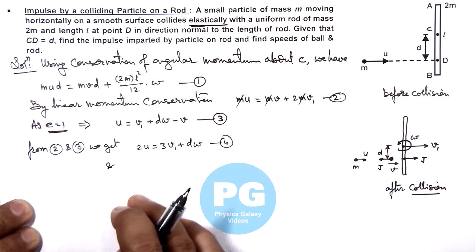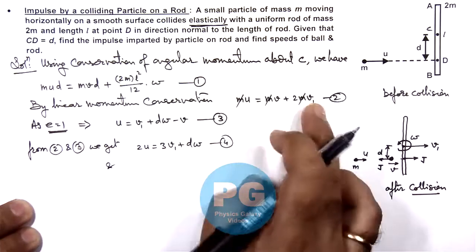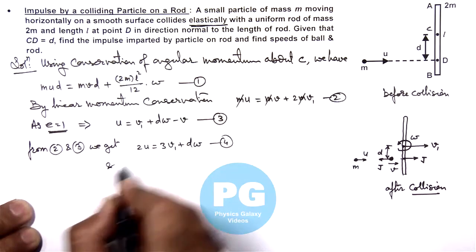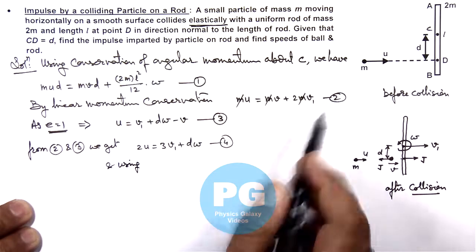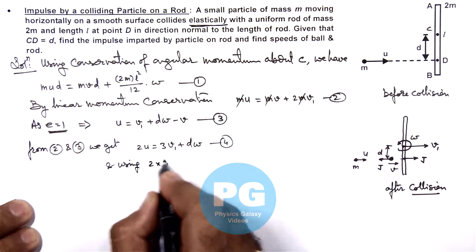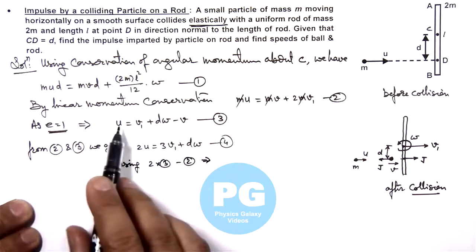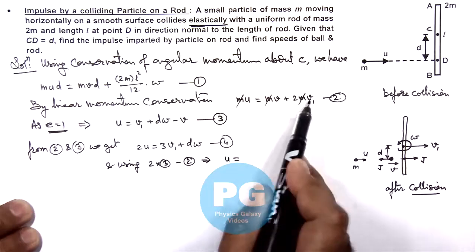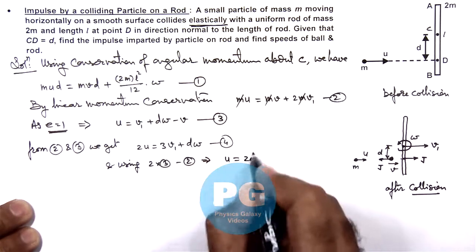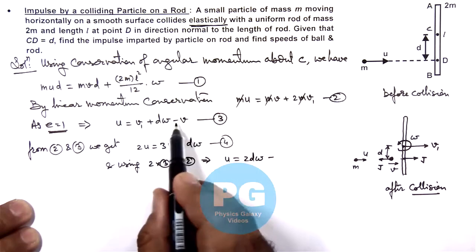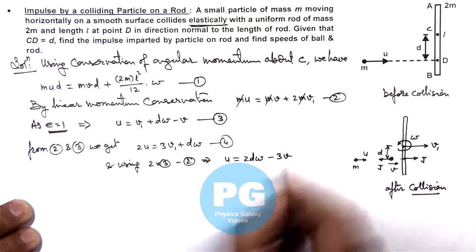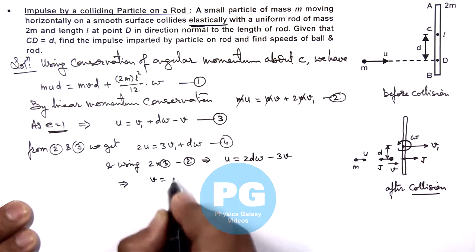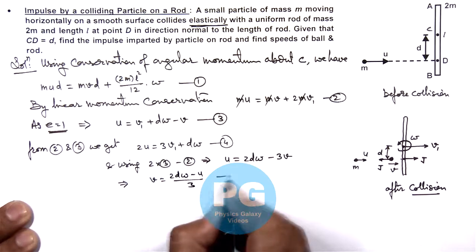We also find a relation between u and v by eliminating v1. Using 2 times equation 3 minus equation 2, we get: 2u − u = u equals 2d·ω − 3v, which simplifies to v = (2d·ω − u)/3. This is our fifth equation.